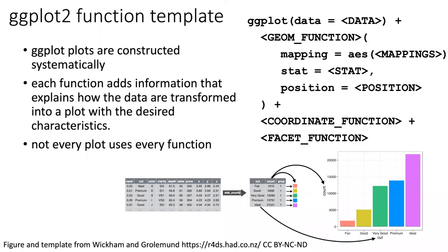To flesh out how this layering works a little bit better, I'm going to talk about a template function that comes from the Wickham and Grolemund website, R for Data Science, and also a diagram that explains this quite well. GG plots are constructed systematically by adding together a bunch of different functions.